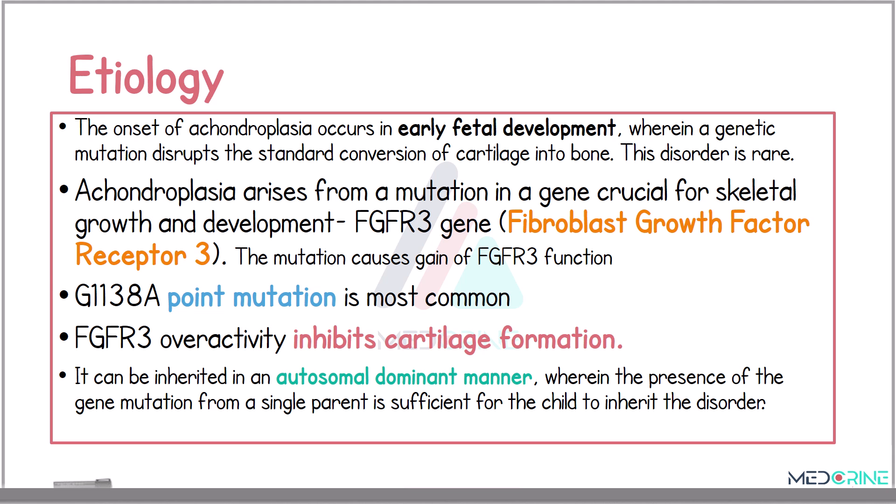Looking at the causes of achondroplasia, the onset occurs in early fetal development where a genetic mutation disrupts the standard conversion of cartilage to bone. Achondroplasia arises from a mutation of a gene crucial in skeletal growth and development known as fibroblast growth factor receptor 3 (FGFR3). A mutation to this gene causes a gain of function of the fibroblast growth factor receptor, leading to inhibition of cartilage formation.